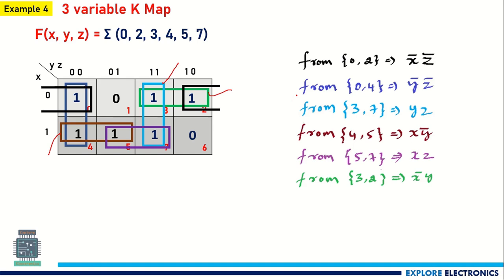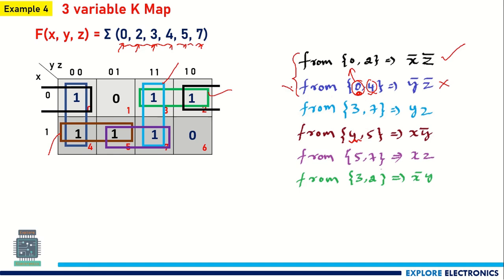How to find the essential prime implicants? The minterms are 0, 2, 3, 4, 5, and 7. While writing the expressions, each minterm must be covered at least once. Looking at the first expression X̄·Z̄, it covers cells 0 and 2. The second expression Ȳ·Z̄ covers 0 and 4 — both 0 and 4 are already covered elsewhere. Out of these two overlapping expressions, we can choose one as the essential prime implicant. I am choosing X̄·Z̄ and neglecting Ȳ·Z̄.